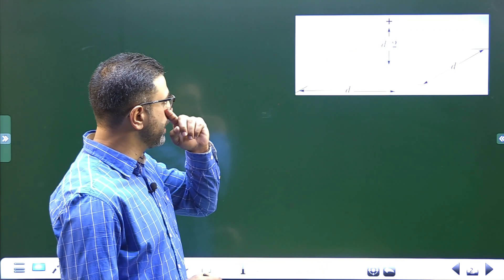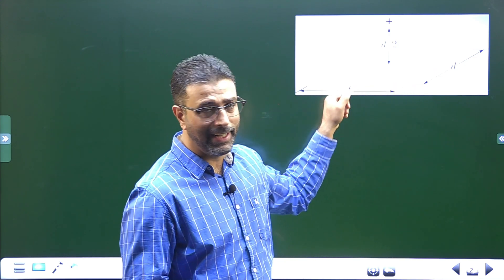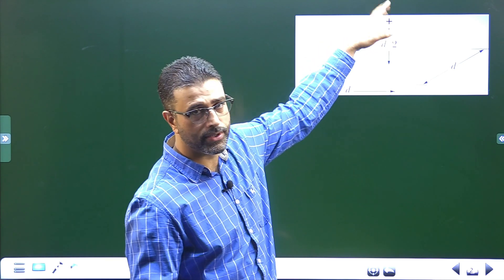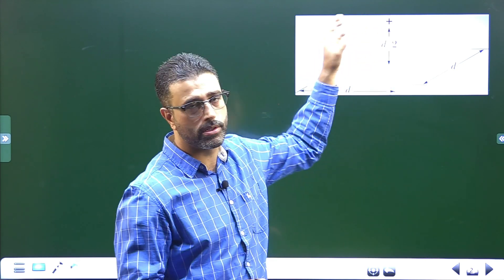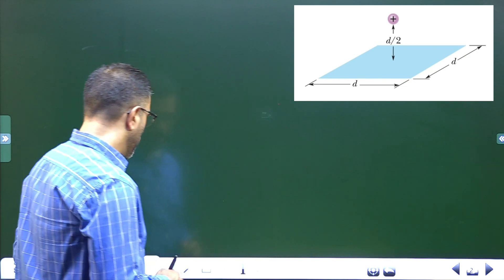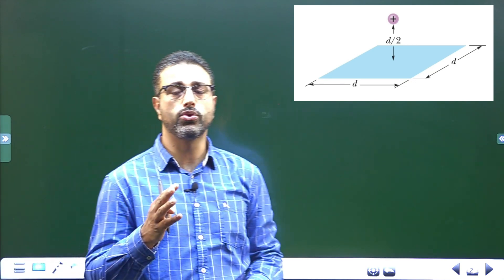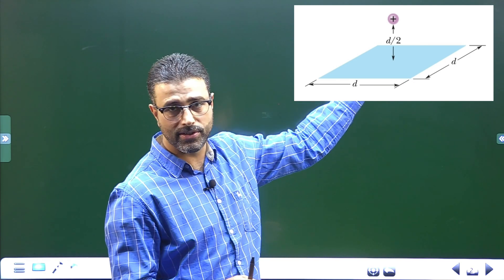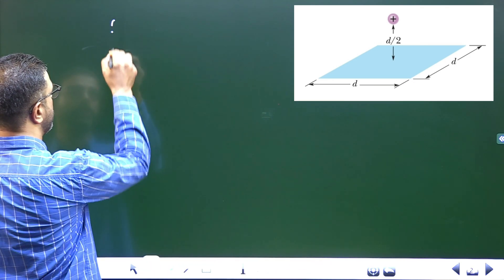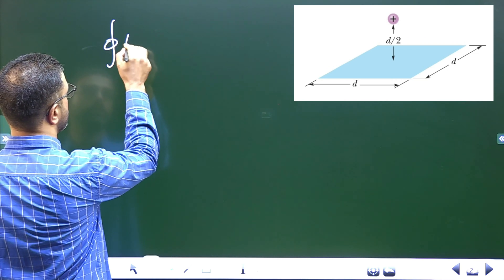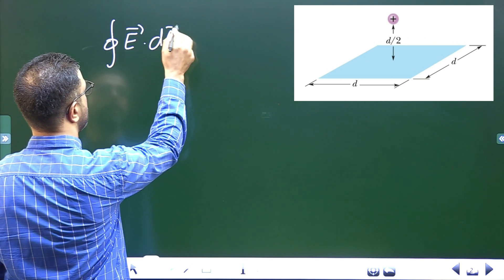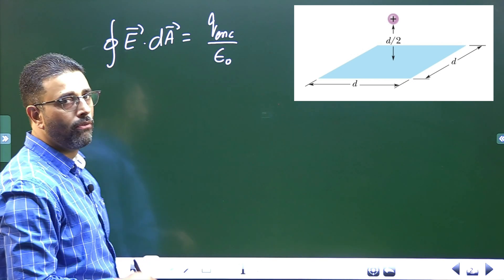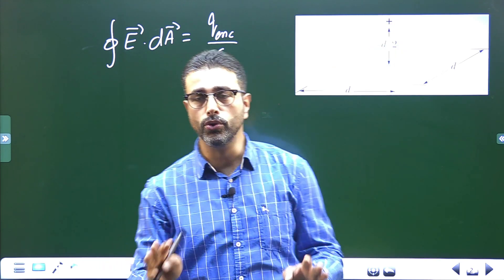We have a situation where we are given a square surface with side d, and then exactly above the center of the square we have a proton placed there. We have to find out the flux through this surface. Whenever you have to find flux through a surface because of a charge placed somewhere, you have to find some way to use Gauss law, which is: flux through a closed surface equals q enclosed divided by epsilon zero.